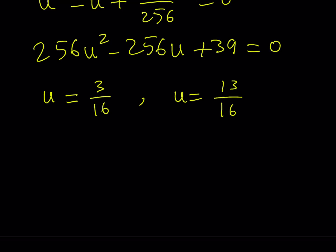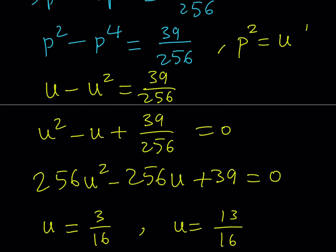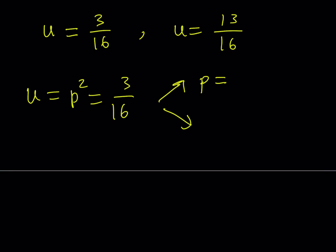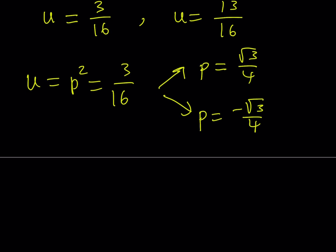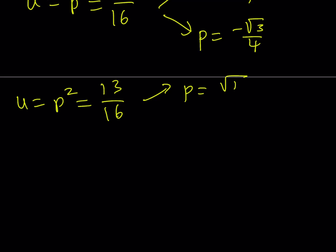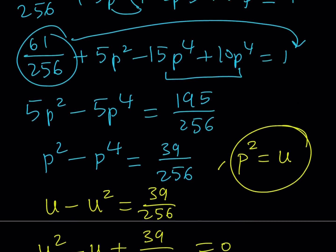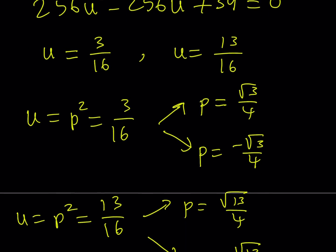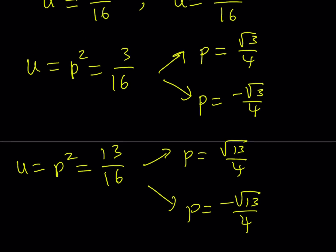Remember, U equals P squared. Setting P squared equal to 3 over 16 gives P equals positive or negative square root of 3 over 4. Setting P squared equal to 13 over 16 gives P equals positive or negative square root of 13 over 4. Now, P is the product — we called P equal to sine x times cosine x — so we set each value equal to sine x times cosine x and solve separately.